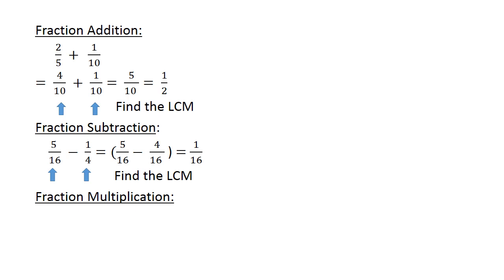Fraction multiplication: 8 over 10 times 4 over 20 equals. 8 times 4 equals 32; 10 times 20 equals 200, which is equal to 32 over 200, which simplifies to 4 over 25.